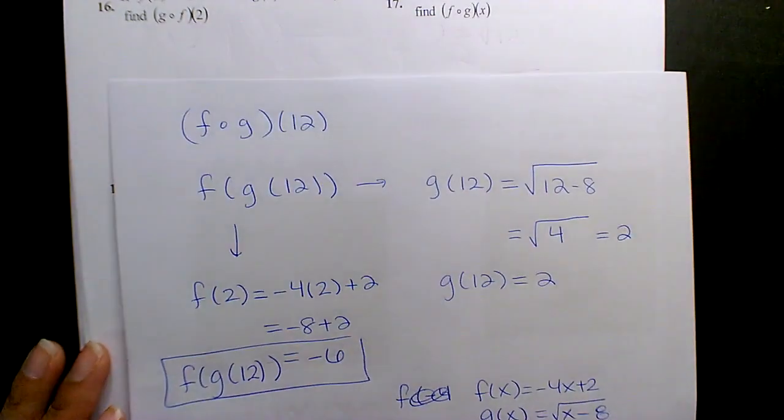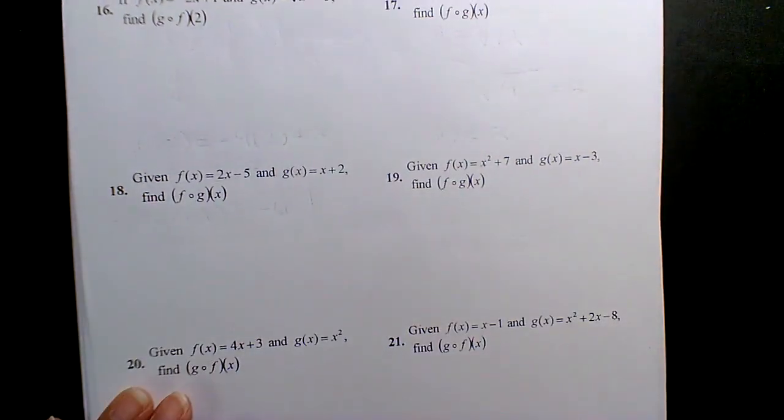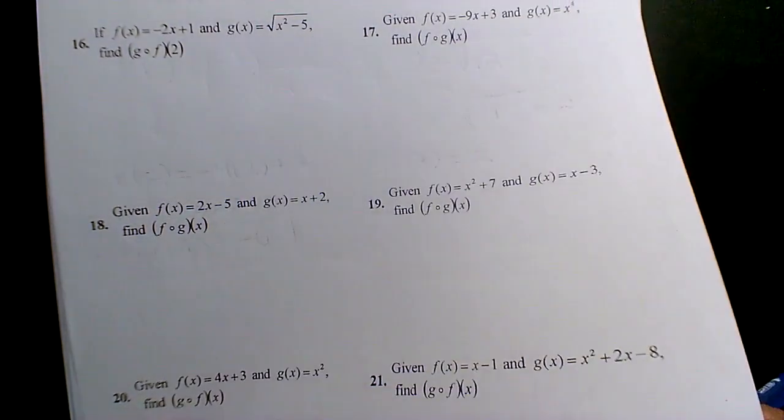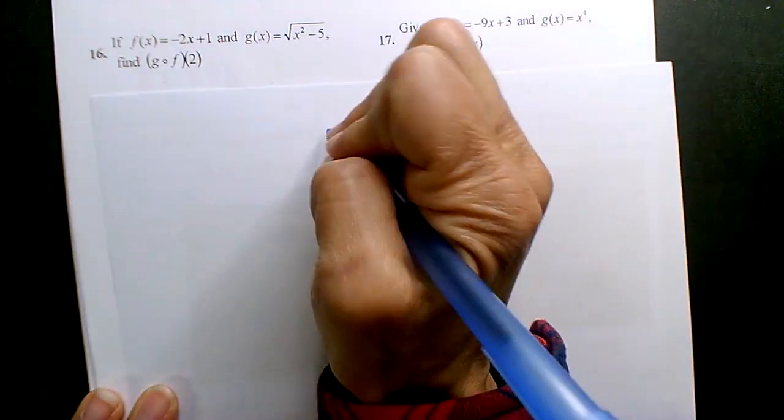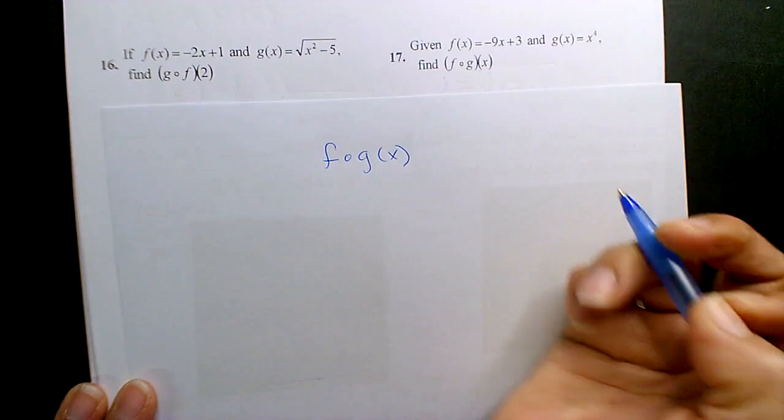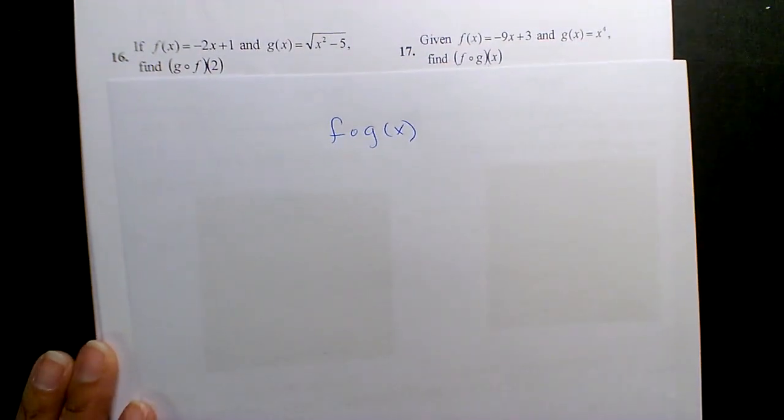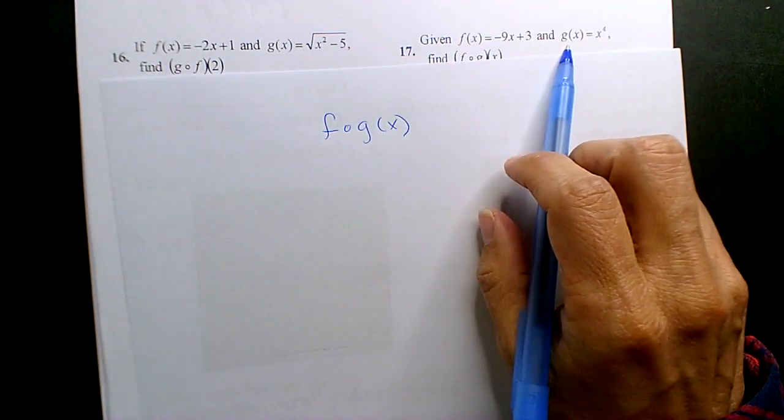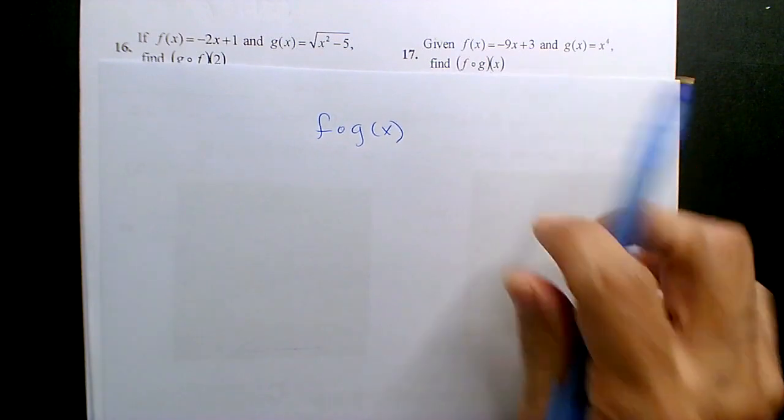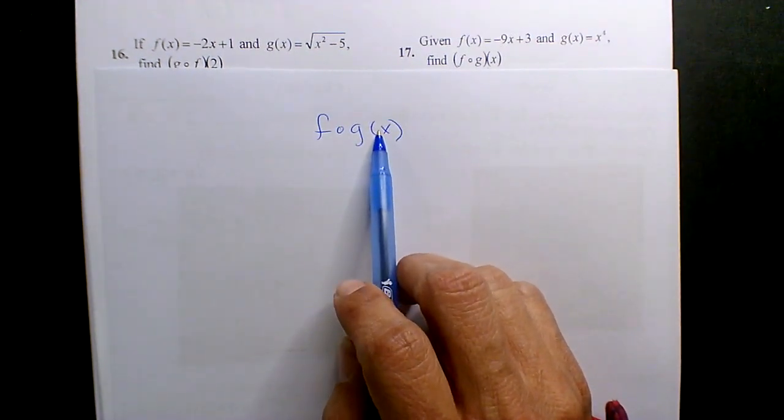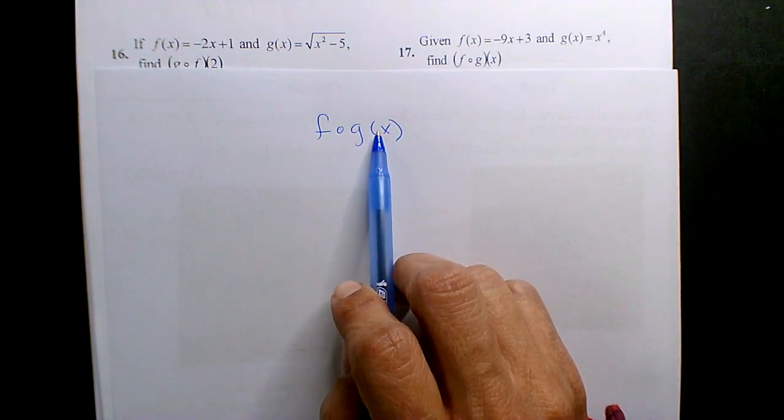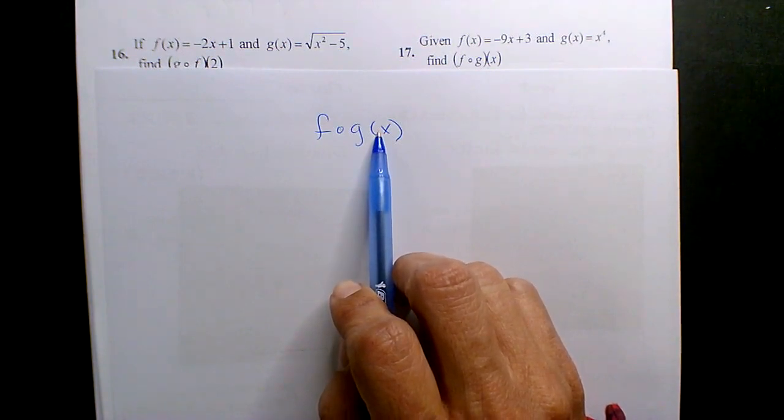So then when you get down to 17, where it's F of G of X, if they want F of G of X and F of X is negative 9X plus 3 and G of X is X to the 4th, but notice, what do I want substituted for X? I want it left alone. I want it to stay as X. I don't want a number to be substituted. Leave it in X notation.